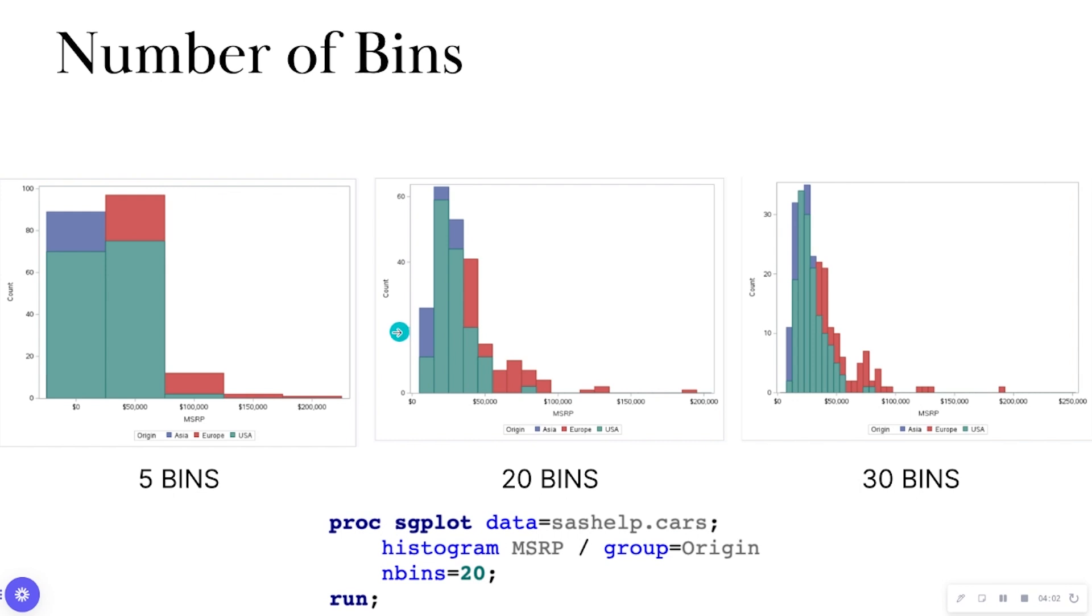I can also change the number of bins of my histograms. With lower bins, my histograms look a lot fatter. Here with my 20 bins, it looks kind of in the middle. And here with my increased bins, it looks a little bit smaller. Okay, so you can play around with the bin size to kind of figure out how you would want your histogram to look.